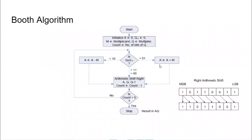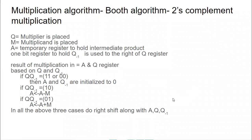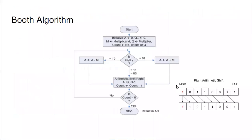Now we'll see the Booth's algorithm steps. Initially, A is set to zero — the temporary register is initialized to zero. Q-minus-1, the extra one-bit register, is also set to zero. You place the multiplicand in M and the multiplier in Q. There is also a count variable: if the multiplier has five bits, the count is set to five, and it is decremented on each right shift, stopping when it reaches zero.